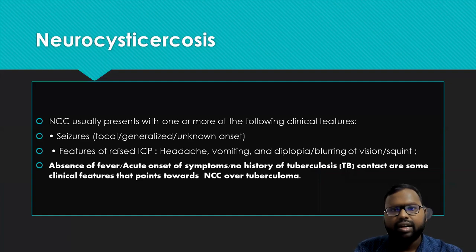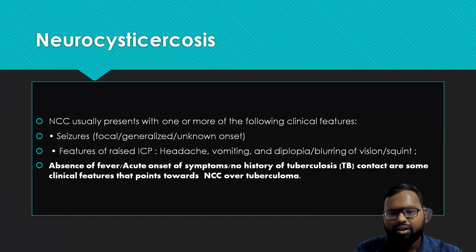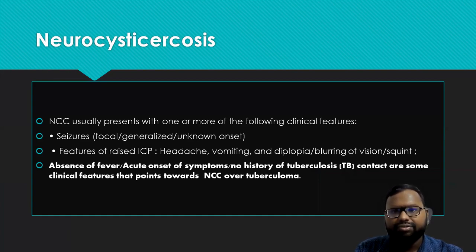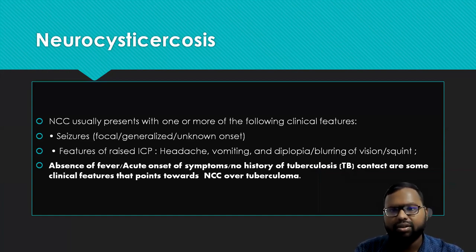Neurocysticercosis usually presents with one of the following clinical features: it may present with seizure in the form of focal or generalized, or sometimes unknown onset, and then features of raised ICP in the form of headache, vomiting, diplopia, blurring of vision, or squint due to involvement of cranial nerve 6.